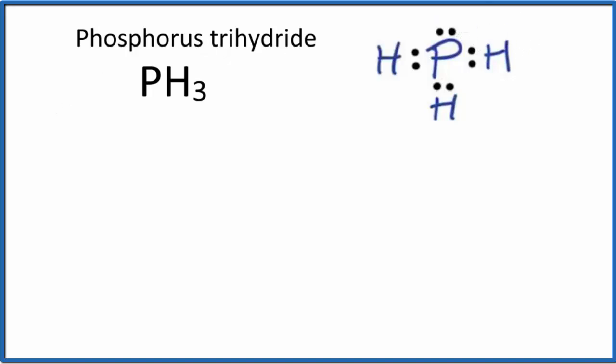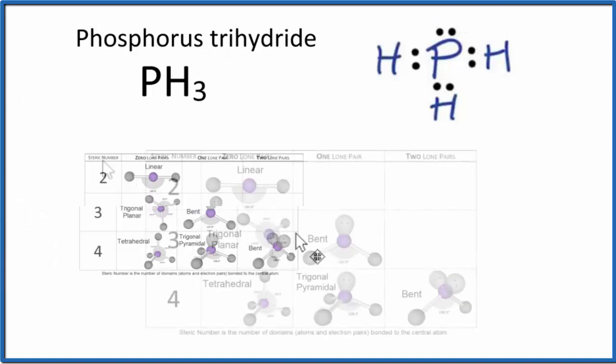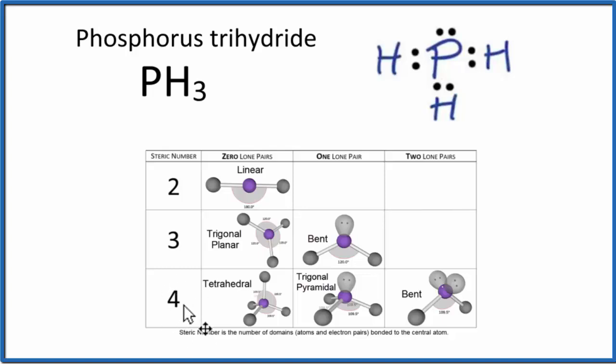With the steric number of four, we can look it up on this table here. We can see the steric number is four and we have one lone pair. With one lone pair and a steric number of four, we have trigonal pyramidal. So the molecular geometry for PH3 is trigonal pyramidal, and this is a useful chart to remember.